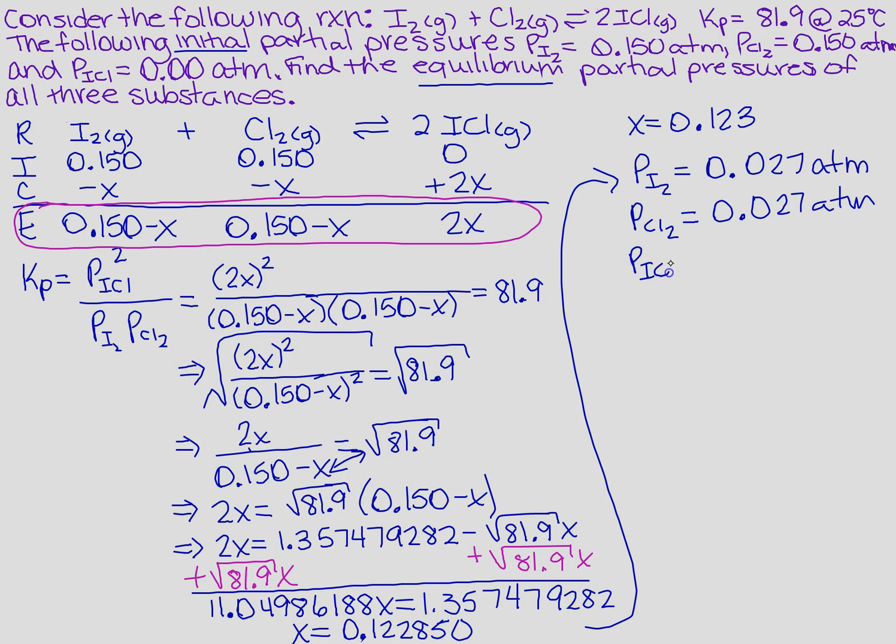And then finally, I have the pressure for ICl. Well, we notice this time it's 2 times X, so I'm going to take 2 times 0.123. And when I do the rounding and everything to three significant figures, I get 0.246 atmospheres. So this right here is going to be your final answer.